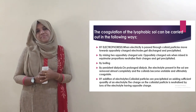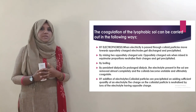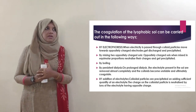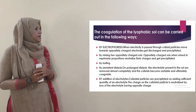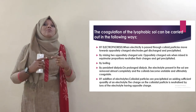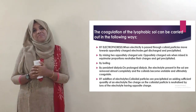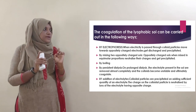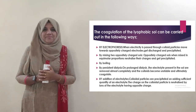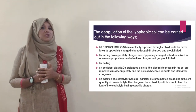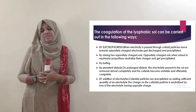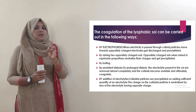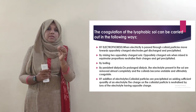Method one: by electrophoresis. The colloidal particle moves towards the oppositely charged electrode when electricity is passed. It then gets discharged and precipitated. This is the first method of coagulation.